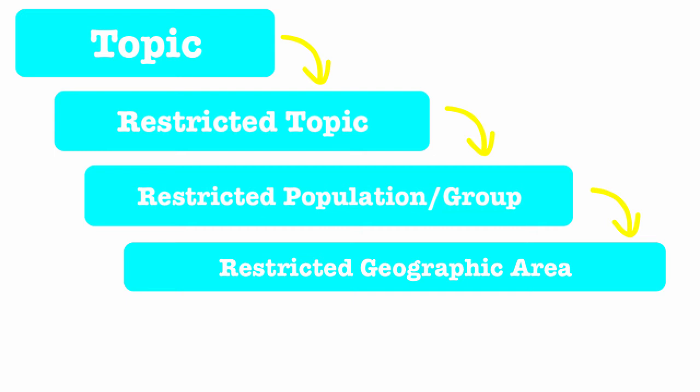By identifying specific variables such as groups and geographic areas, you open up your research question to be able to compare and contrast as well as help to narrow down the scope of your research.